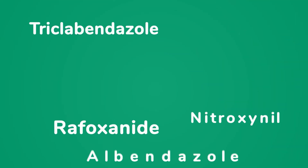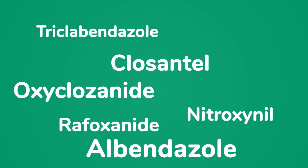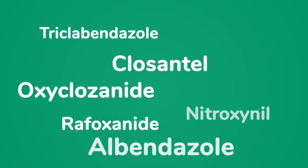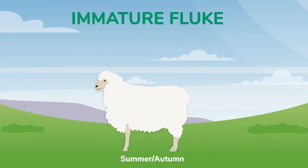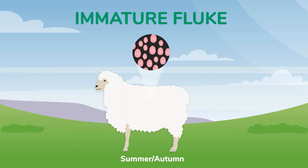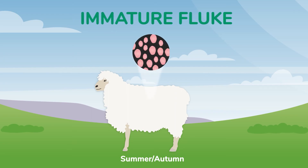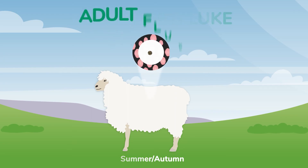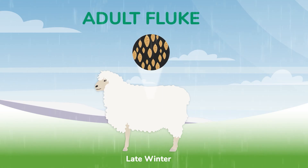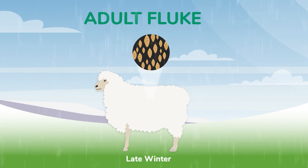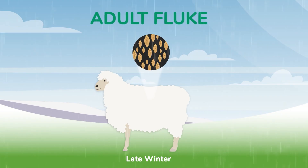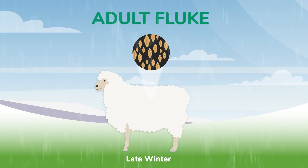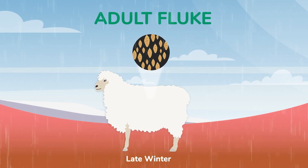It is important that the correct type of flukicide is used. During late summer and autumn, when sheep are actively picking up infection, the flukicide used should be effective against immature fluke. In late winter or after a period of housing, a flukicide that is effective against adult fluke can be used as a clean-out dose to prevent fluke eggs contaminating the pasture when the sheep are turned out in the springtime.